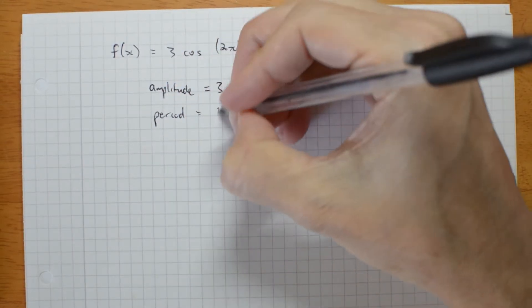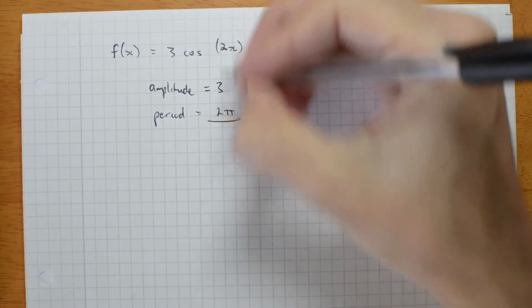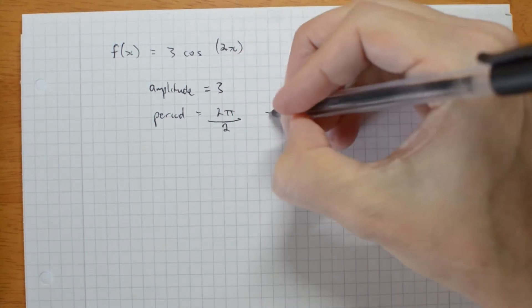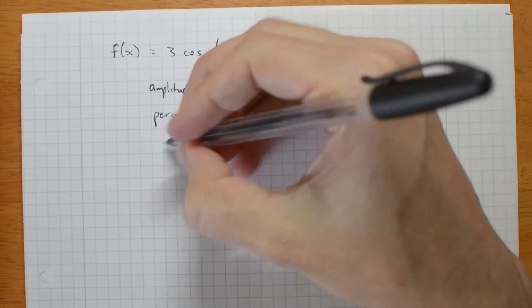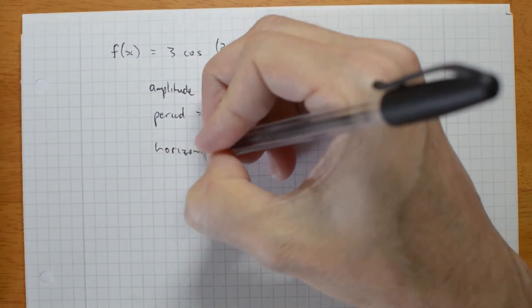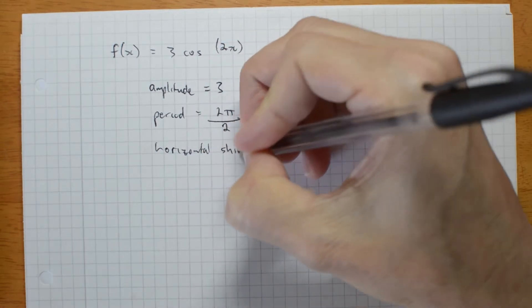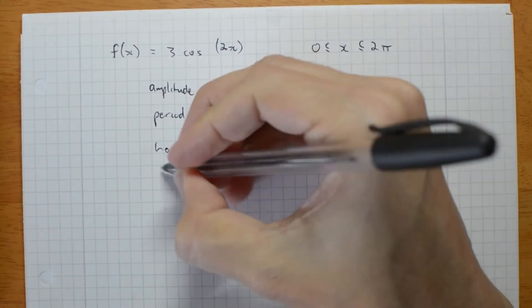The period is 2pi over this number, which is pi. There's no horizontal shift, and there's no vertical shift.